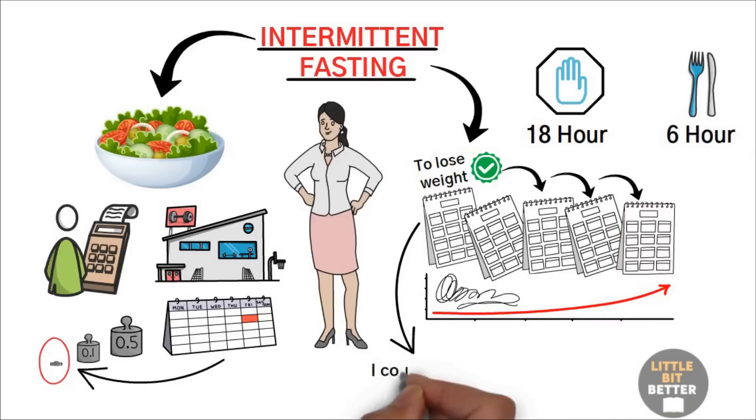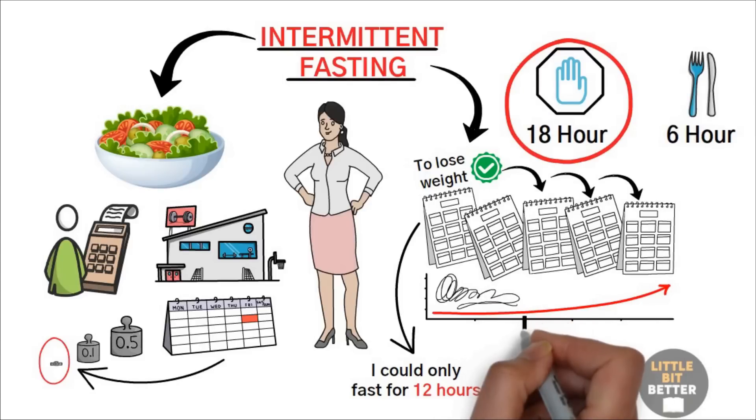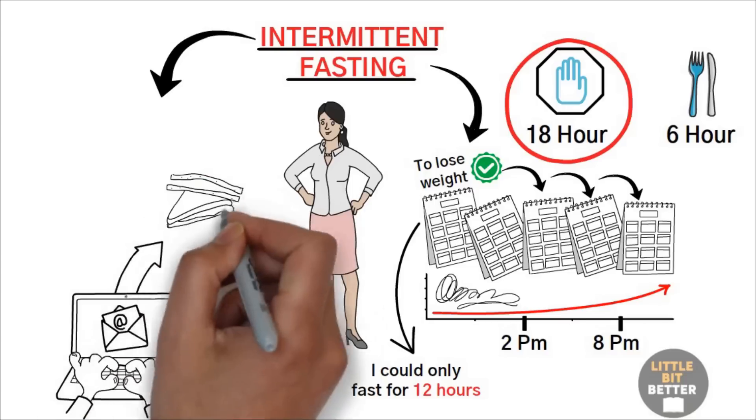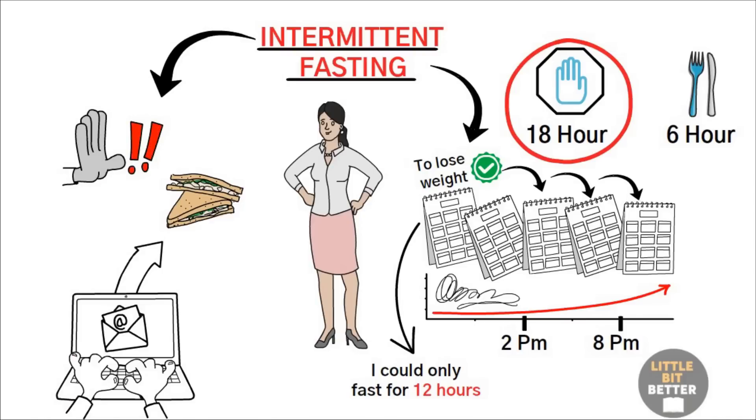I currently have 18 hours of fasting and 6 hours of eating window. But when I started, I could only fast for 12 hours max, and then increased it slowly to 18 hours. These days, I only eat from 2 p.m. until 8 p.m. Now, I can already see comments saying that breakfast is the most important meal of the day, and you shouldn't skip it, or you shouldn't fast that long. First of all, this is what best fits my schedule.